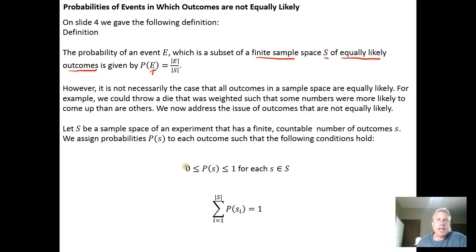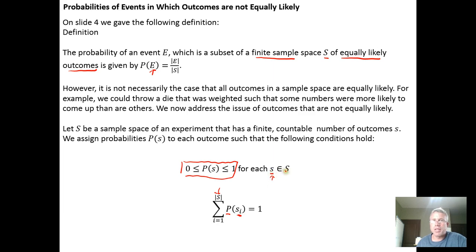The big idea we're going to use is that if we have a sample space S and we sum the probabilities of all of the outcomes in the sample space — where these little s's are individual outcomes — then if we take the sum from i equals one to the number of elements in the sample space, those probabilities have to add up to one, because that represents 100% of everything that can possibly happen.